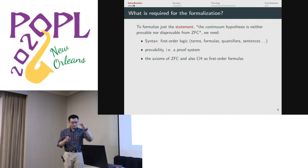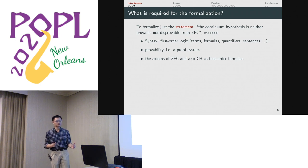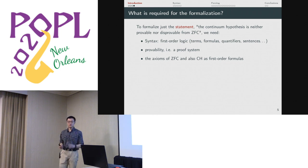We've already seen a talk at this conference about someone just stating something. They wanted to say what a perfectoid space was and they wanted Lean to understand it. So what do we have to do to make Lean understand the statement of the independence of CH? First, you have to start with a deep embedding of first-order logic. You need a notion of terms, formulas, free variables, bound variables. You need a proof system. You have to be able to say what it means for ZFC to prove CH or not CH. And you need the axioms of ZFC and CH as first-order formulas.